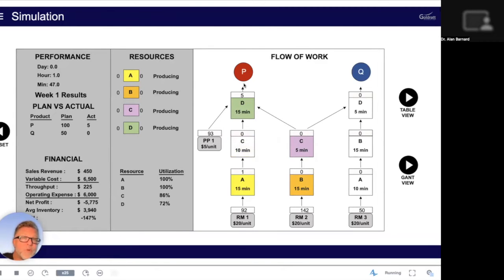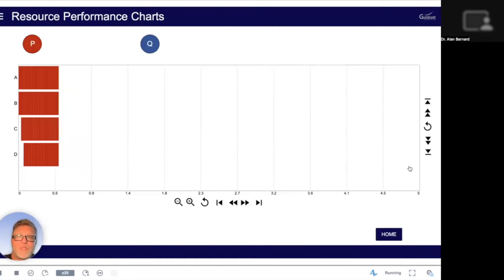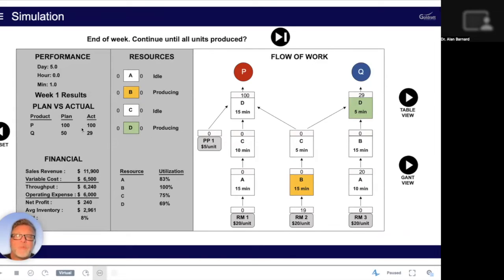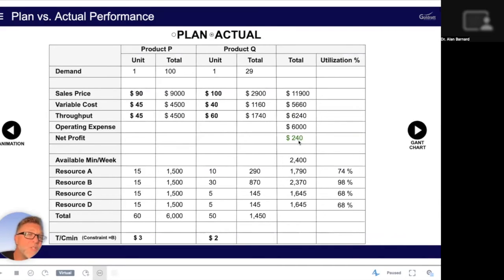So again, we can see our machines are now focused on trying to produce as many P as we can. Let's go to the Gantt chart and see what's happening there. It looks like we've lost a bit of time initially for C and D for those products to reach C and D, but so far so good. And then we run it to the end. Let's see what would have happened. We only managed to produce 29 of Q, not 30 because of that slight delay. So machines C and D don't quite have 2,400 minutes available because of that slight delay in the beginning. But this is very interesting. So if I go to my table view, I'm now making $240, which is a lot better than minus $390.